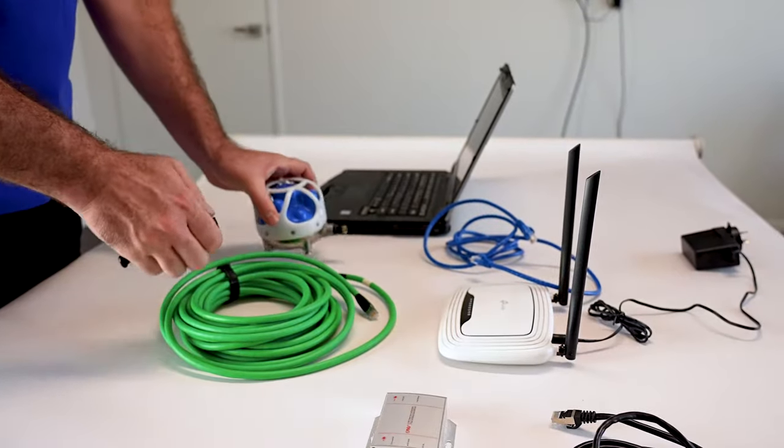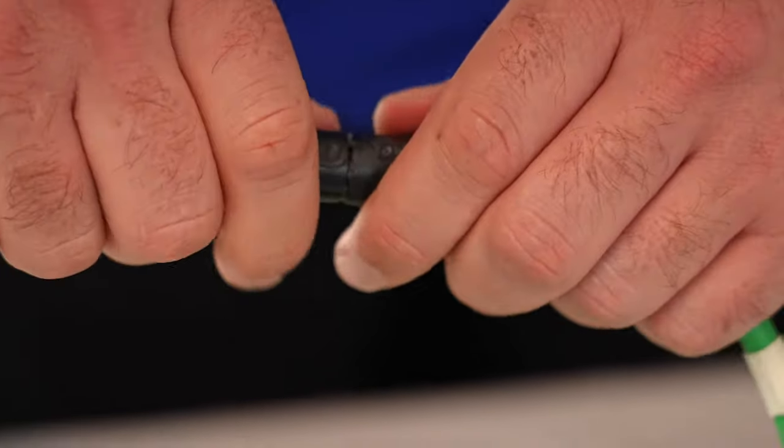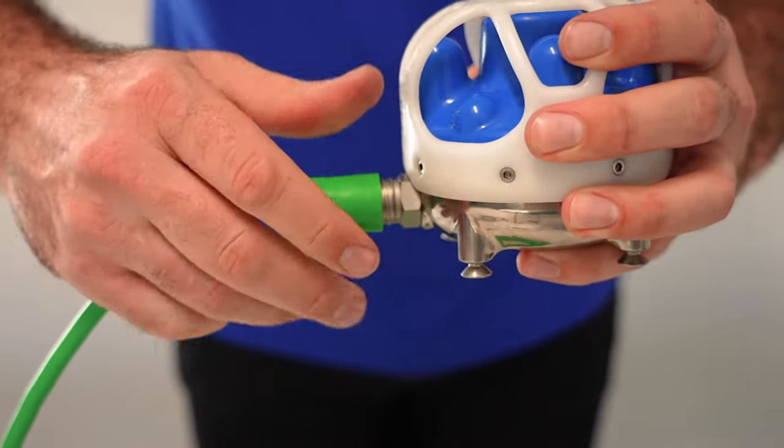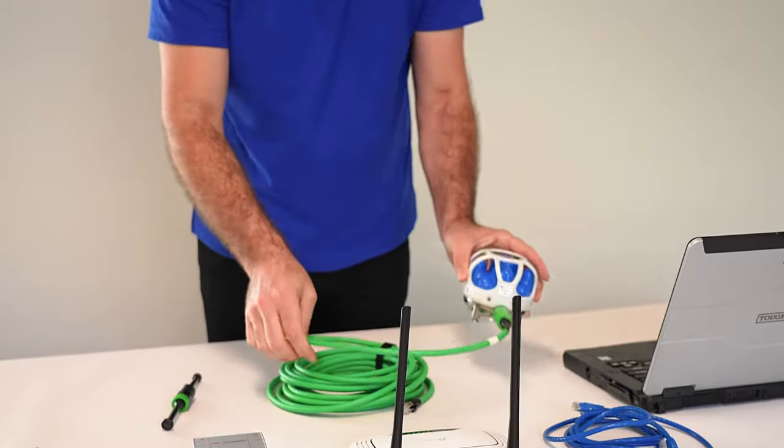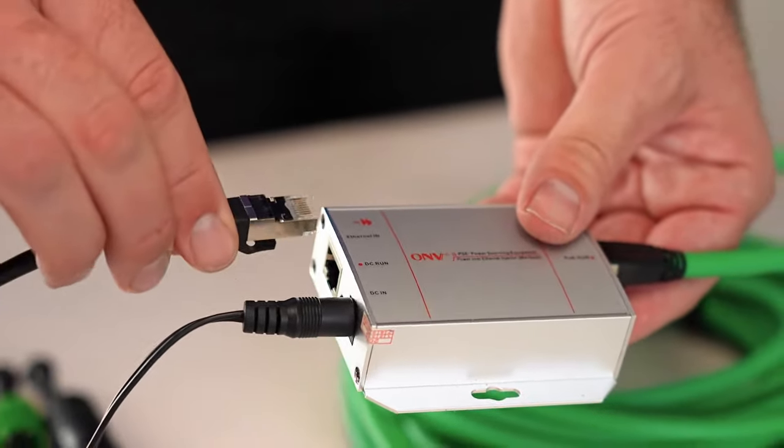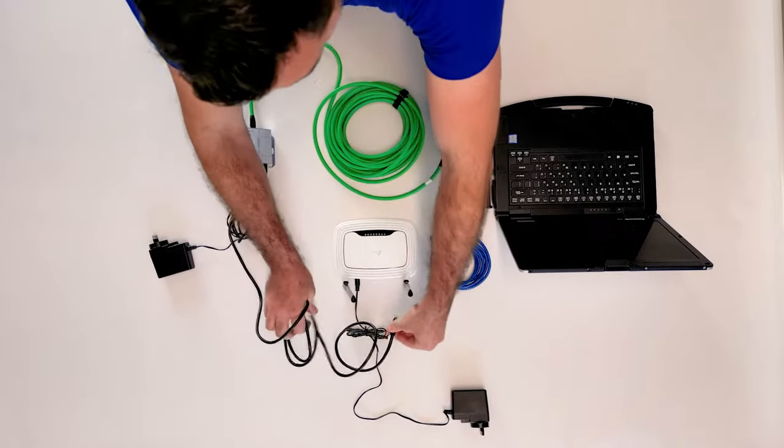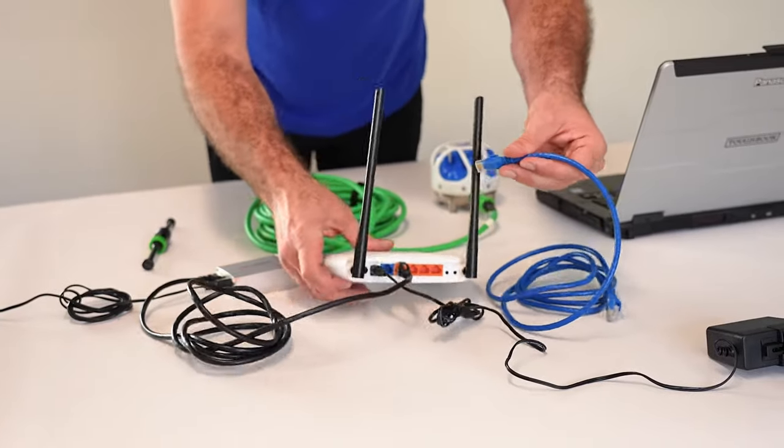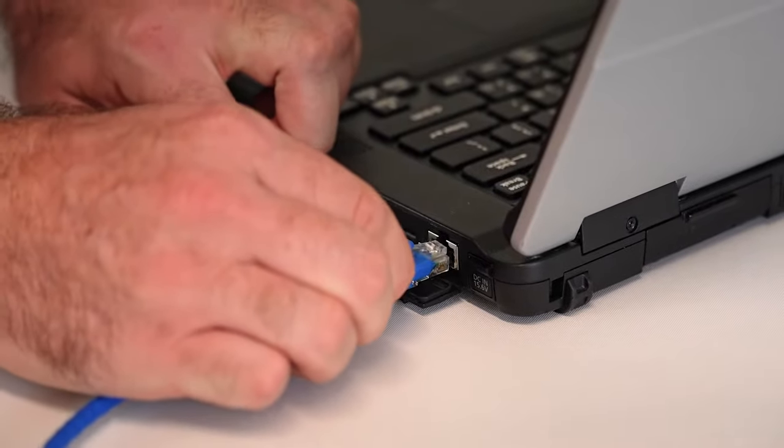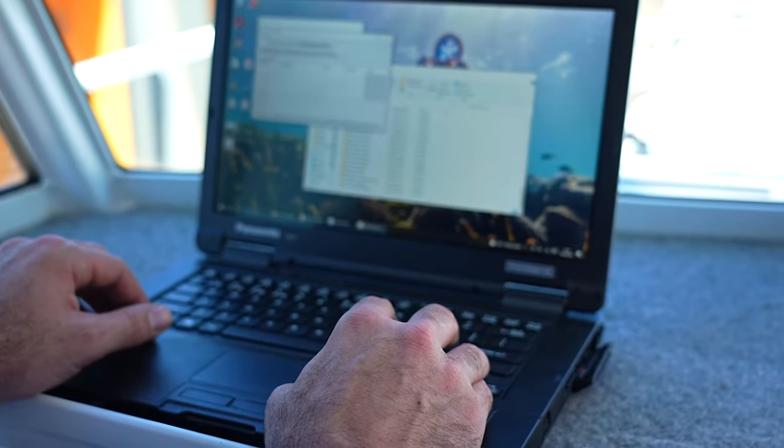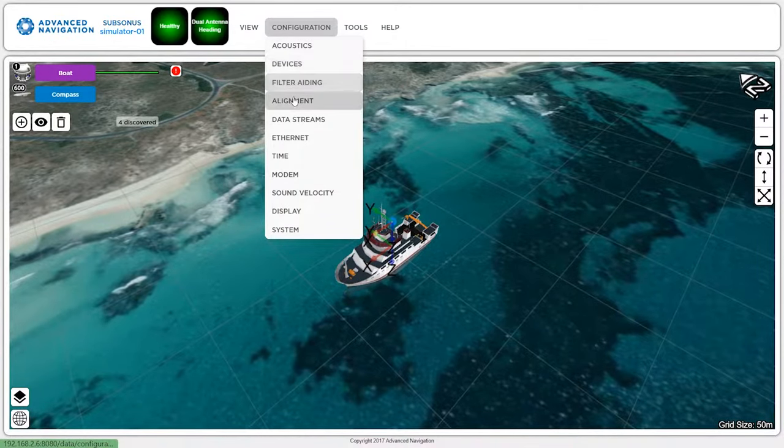To start using Subsonus, connect it to a power over Ethernet injector using the supplied cable and a power supply. You can now access the system via the router using an Ethernet cable or wirelessly. No software installation is required. Connection to Subsonus is performed via web browser.